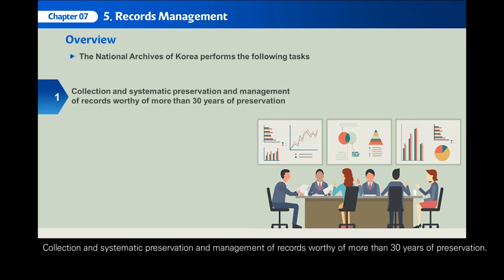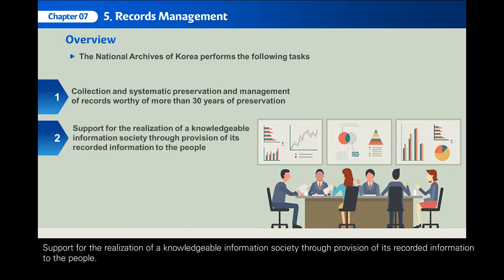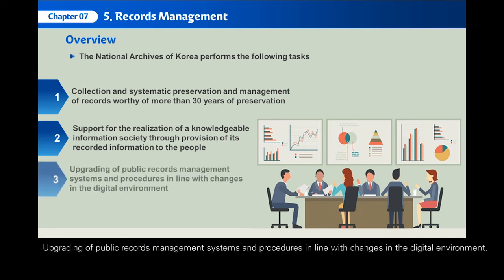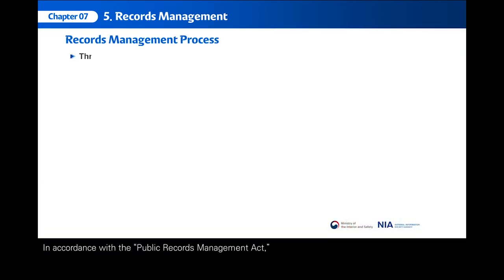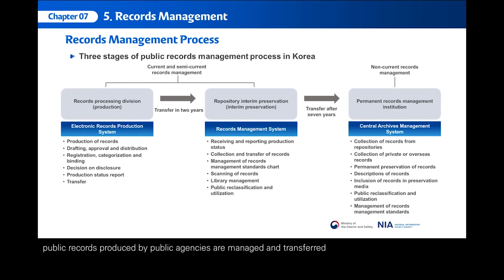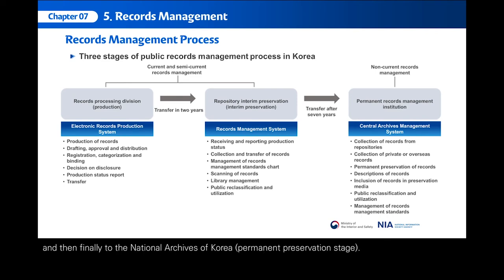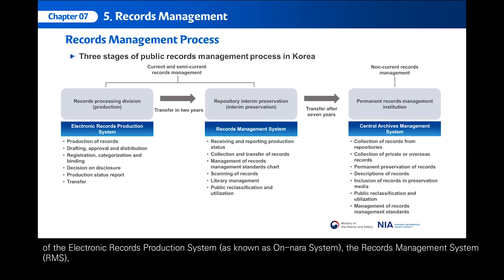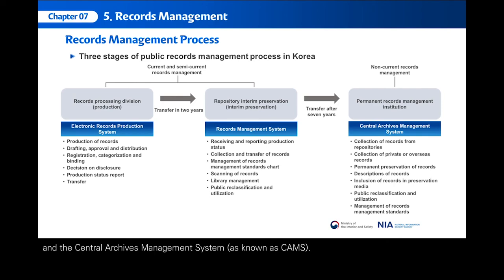Tasks include: collection and systematic preservation and management of records worthy of more than 30 years of preservation; support for the realization of a knowledgeable information society through provision of recorded information to the people; and upgrading of public records management systems in line with changes in the digital environment. In accordance with the Public Records Management Act, public records are managed and transferred from a records processing division (records production stage) to a records repository (records management stage), and then finally to the National Archives of Korea (permanent preservation stage). This three-stage system operates through the Electronic Records Production System (ONNARA system), the Records Management System (RMS), and the Central Archives Management System (CAMS).